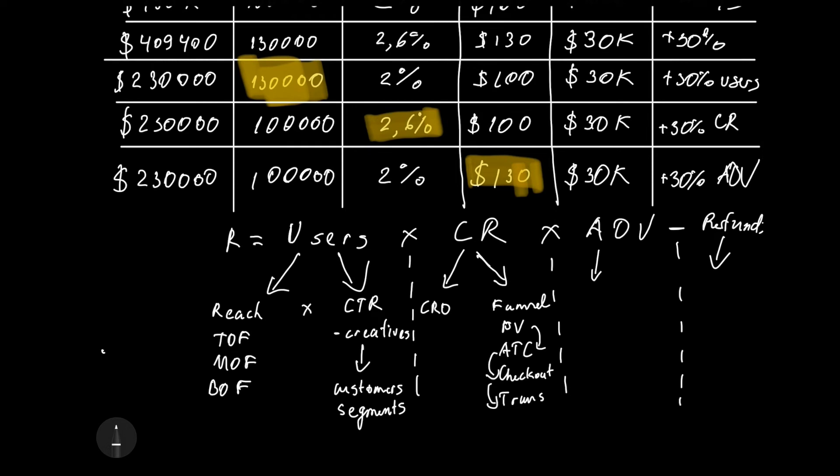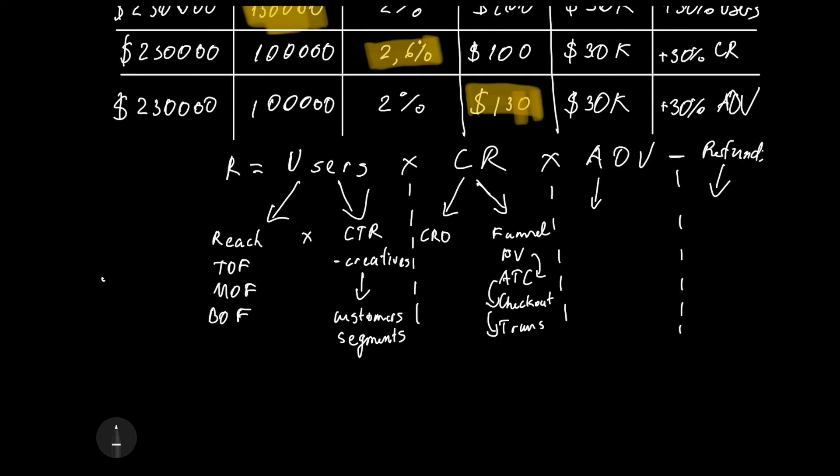It means we monitor cart abandonment rate, checkout abandonment rate and their impact on the overall conversion rate. For conversion rate optimization it's most important to monitor not only your quantitative data but also qualitative data like surveys, live chats and so on. If you get a good volume of transactions every month you can do A/B tests.